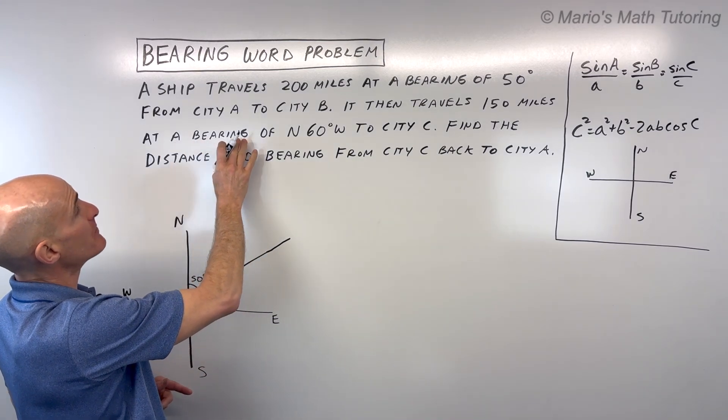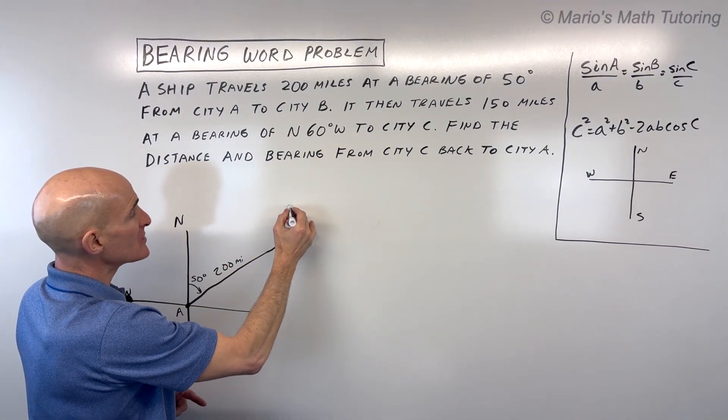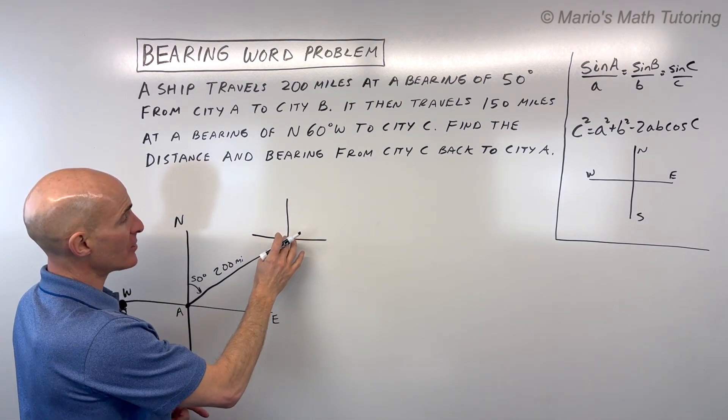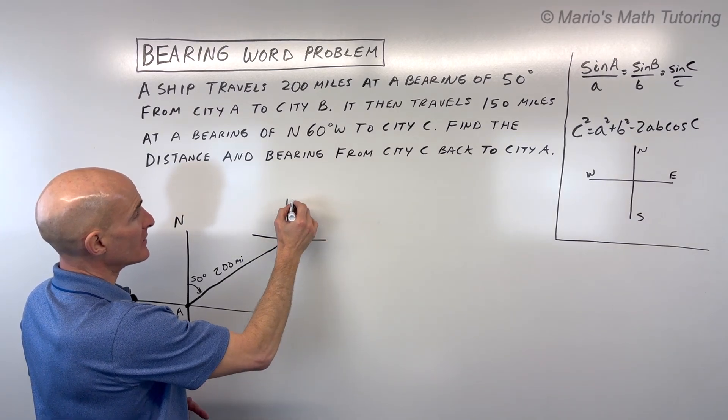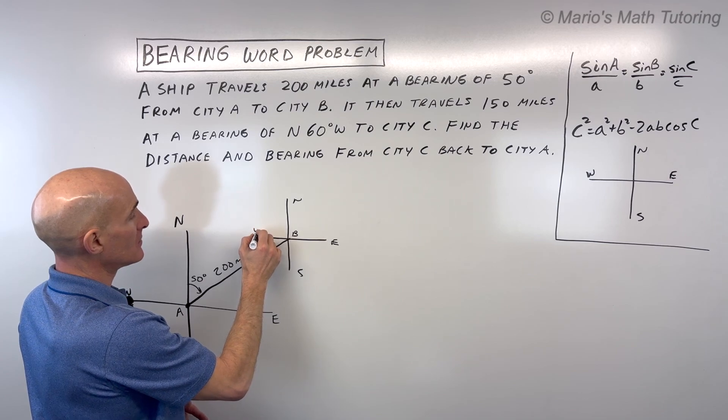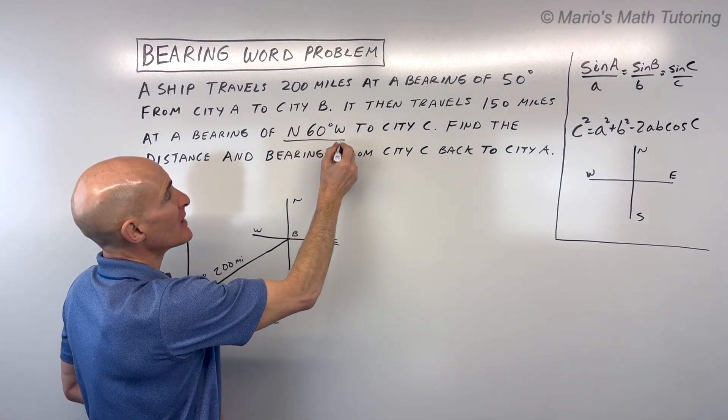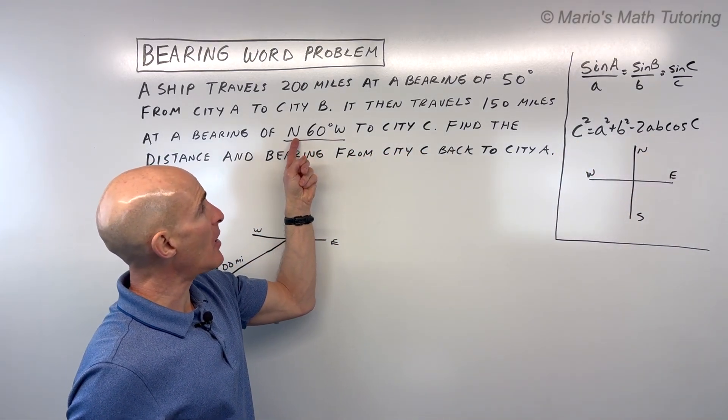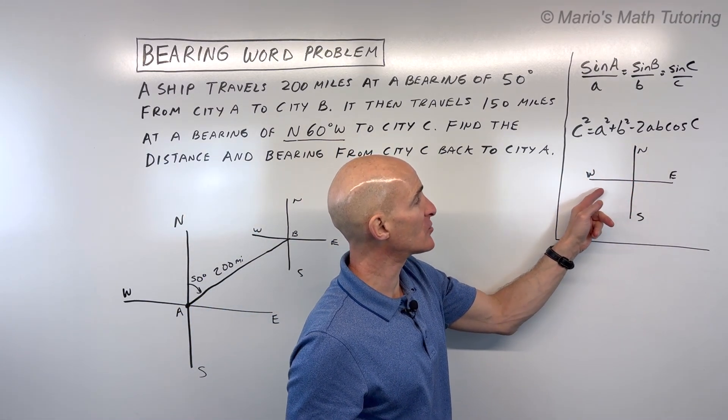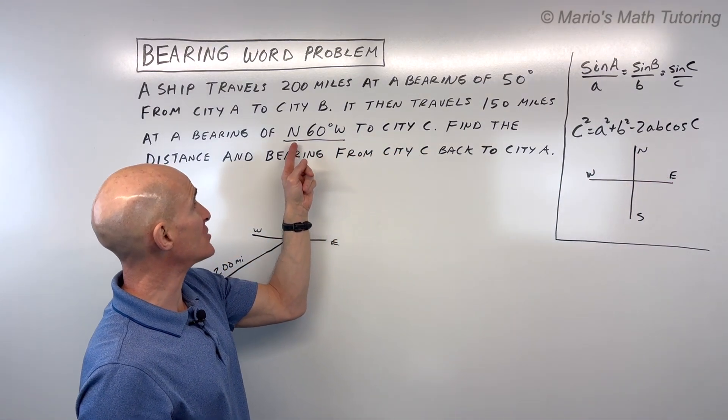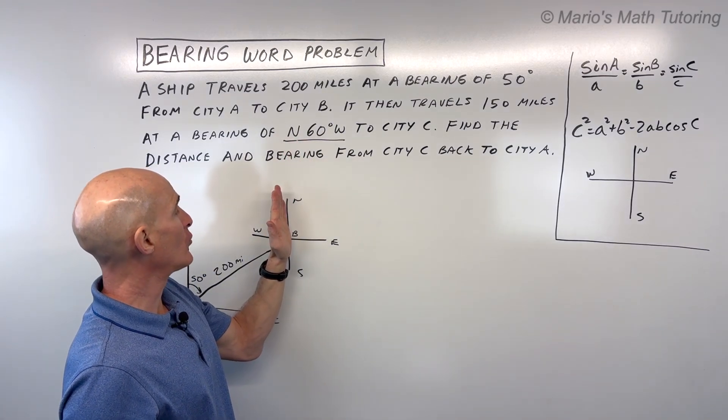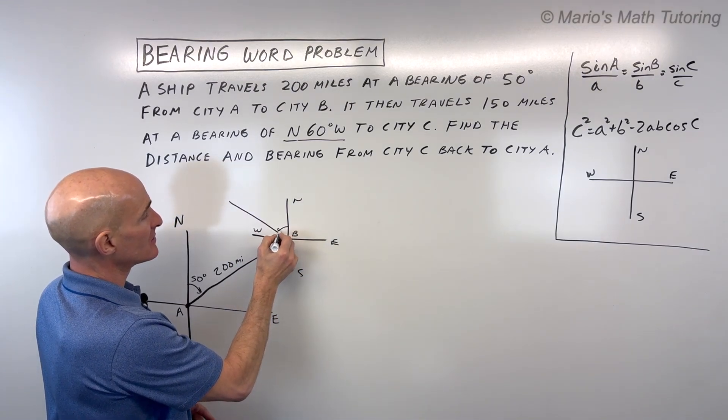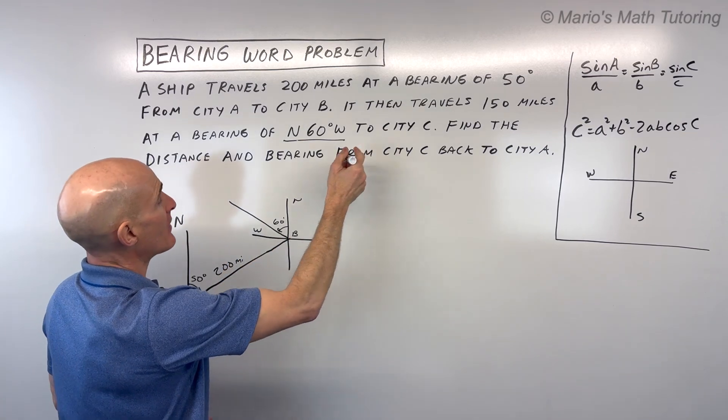Then it travels 150 miles at a bearing of north 60 degrees west. So I would draw another northeast-southwest coordinate axis system right here. This is city B. This is another way of describing the direction. Instead of just going clockwise from the north, you either start facing north or south—that's what this first letter represents. And then you rotate towards the west or the east from that first direction. So in this case, I'm facing north, I'm rotating 60 degrees towards the west. That's going to be something like this, and that's traveling 150 miles.